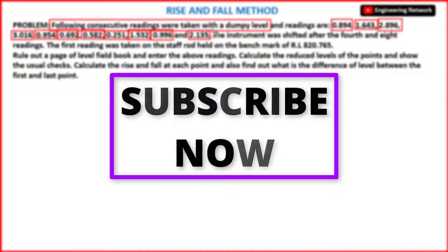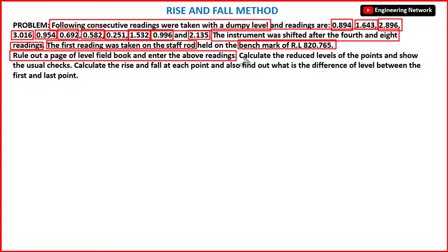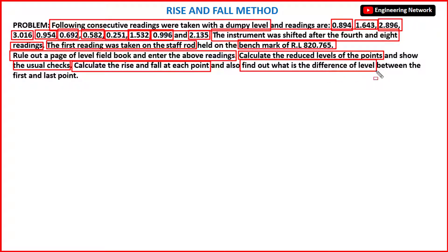The readings also include 0.996 and 2.135. The instrument was shifted after the fourth and eighth readings. The first reading was taken on a benchmark of reduced level 820.765. We need to rule out a page of the level field book, enter the readings, calculate the reduced levels with usual checks, calculate rise and fall at each point, and find the difference in reduced level between the first and last point.